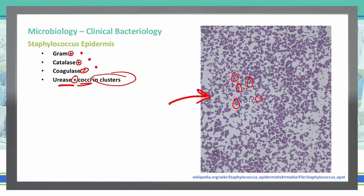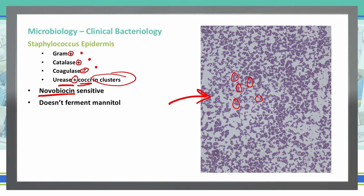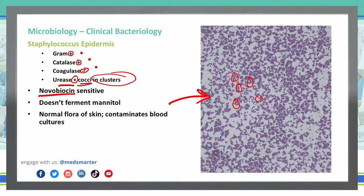One other thing to note is that Staph epidermidis is sensitive to novobiocin and does not ferment mannitol. A key factor for Staph epidermidis is that it is normal flora found on our skin — we have this all over us. It doesn't cause any type of infection under normal circumstances. The problem comes in when it gets into an area that allows the infection to settle in, such as an open wound or a cut.